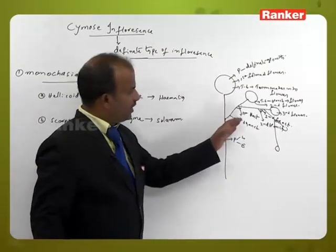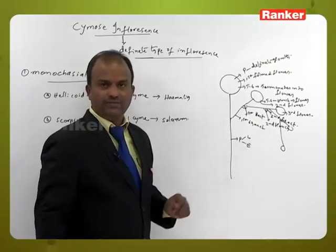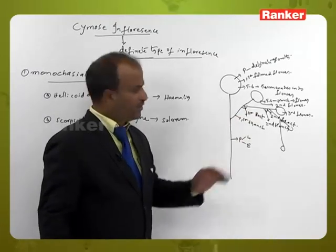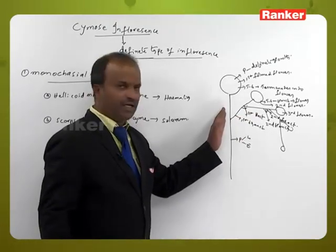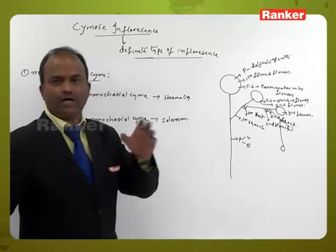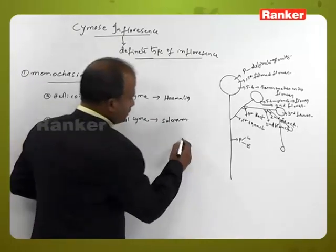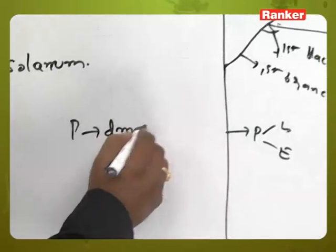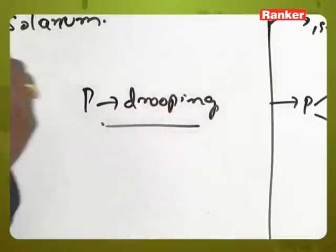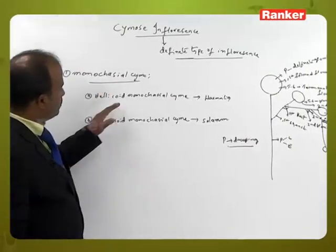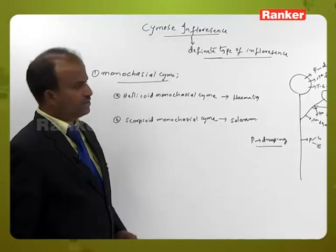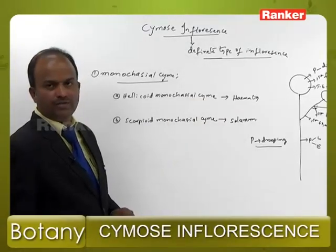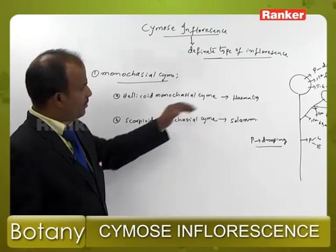Branches continuously develop from one side only. Due to which weight appears towards one side, causing the peduncle to droop. This is helicoid monochasial cyme, seen in Heamelia.